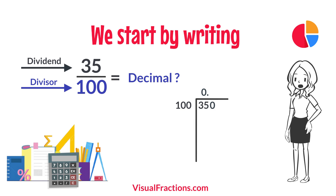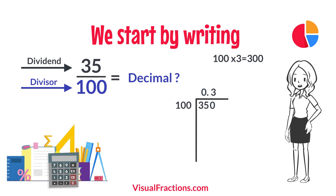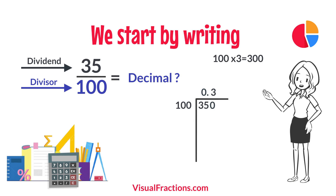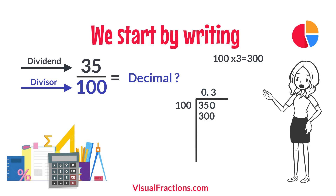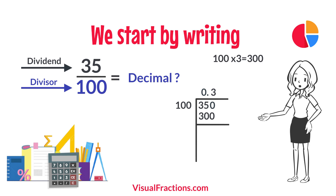How many times does 100 go into 350? Exactly three times. We write 3 after the decimal point in the quotient, making it 0.3. Multiplying 3 by 100 gives us 300. When we subtract 300 from 350, we get a remainder of 50.